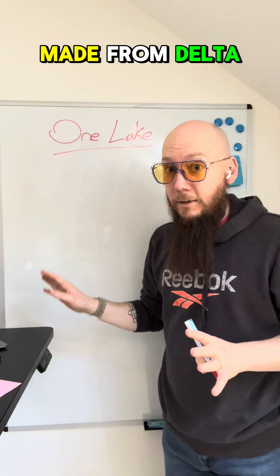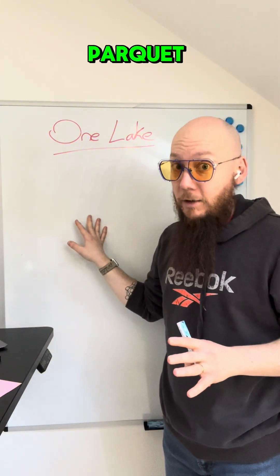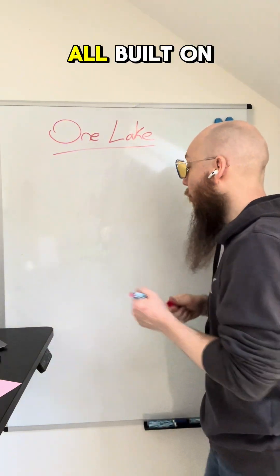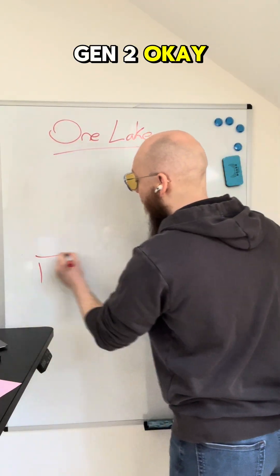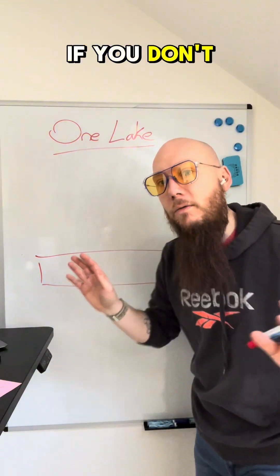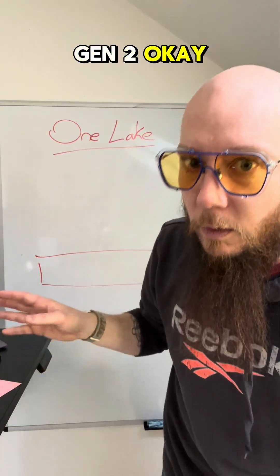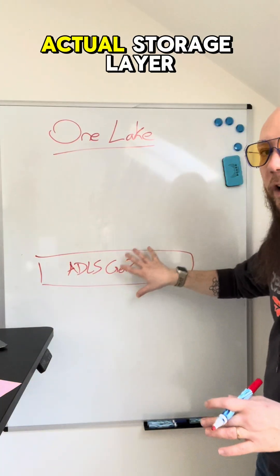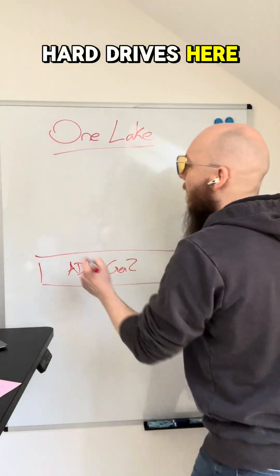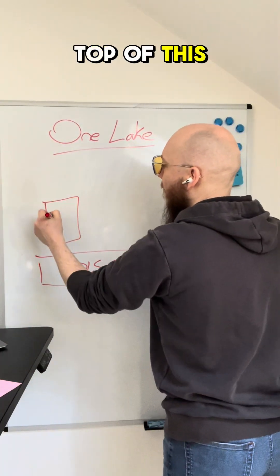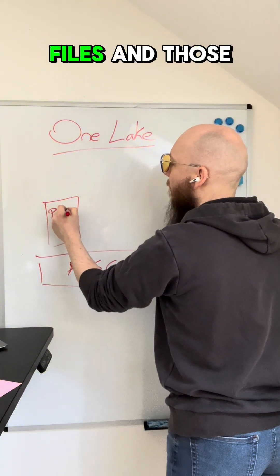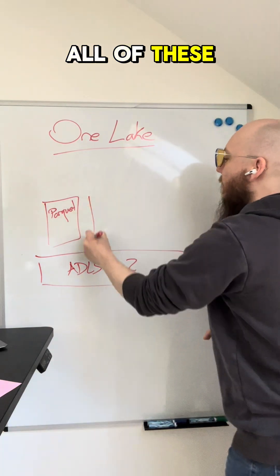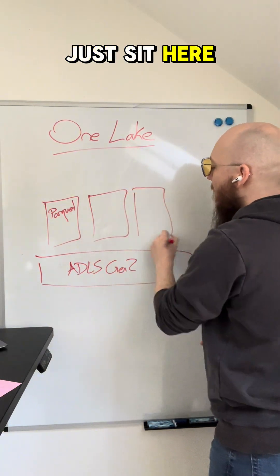OneLake is made from Delta Parquet files. Our friend on this channel, the Parquet file, is back. And it's all built on top of ADLS Gen 2. So you've got this cloud storage — if you don't know what ADLS Gen 2 is, it's just some hard drives in the cloud. So we have this actual storage layer, the hard drives, and then on top of this we have Parquet files, which represent the data that is coming in.